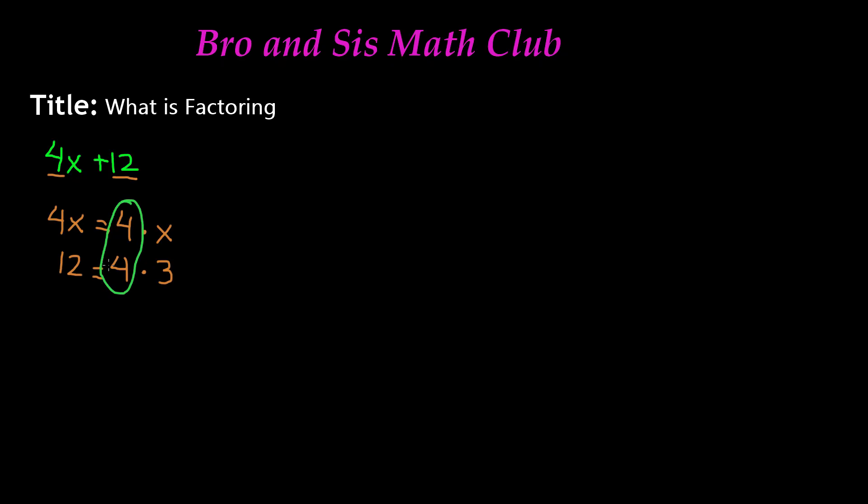So I don't really need to write the number 4 twice. This is where I can tie in the distributive property. So factoring is kind of like the reverse of the distributive property. So if I have the number 4, rather than writing it twice, I can multiply it by both x and 3.